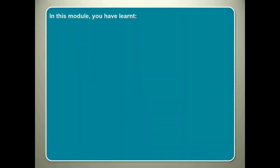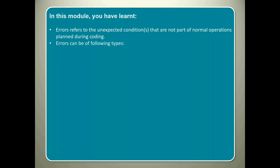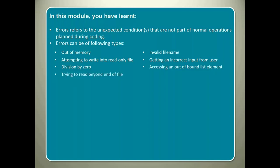In this module you have learnt: errors refers to the unexpected condition or conditions that are not part of normal operations planned during coding. Errors can be of following types: out of memory, invalid file name, attempting to write into read-only file, getting an incorrect input from user, division by zero, accessing an out of bound list element, trying to read beyond end of file, and sending illegal arguments to a method.